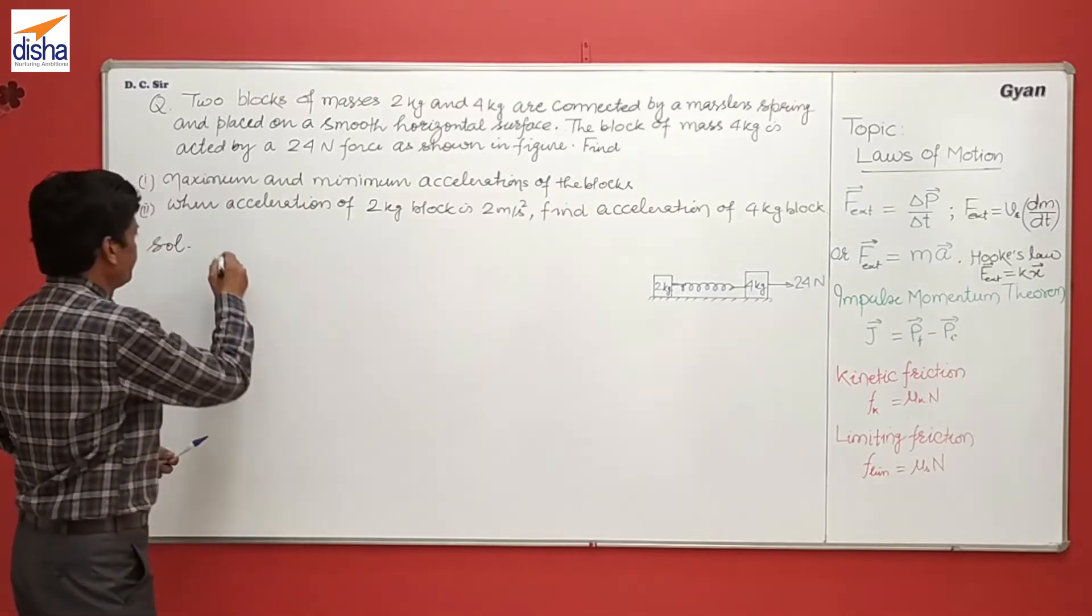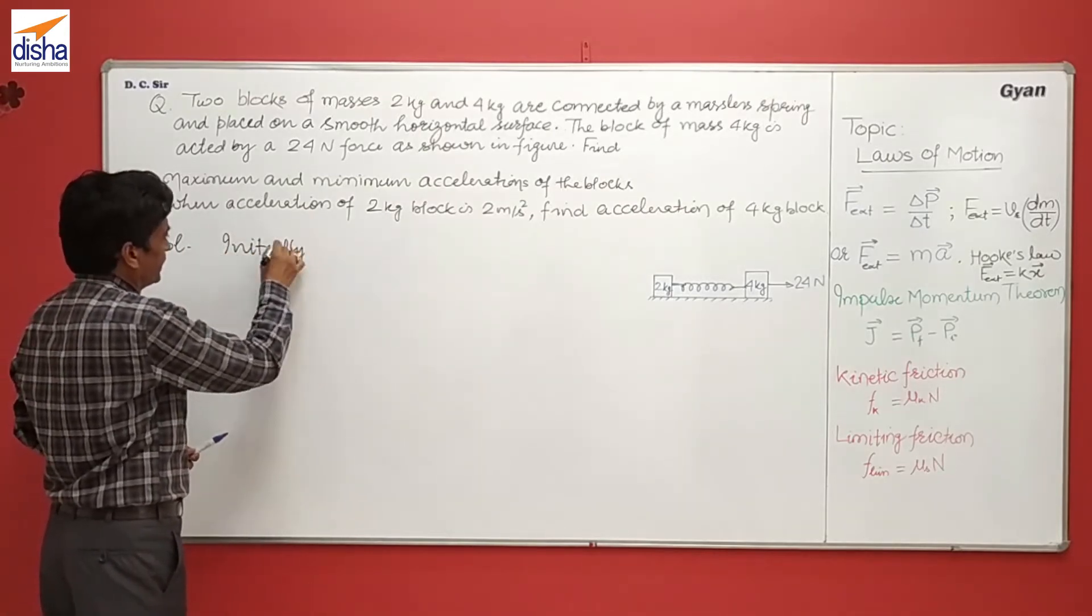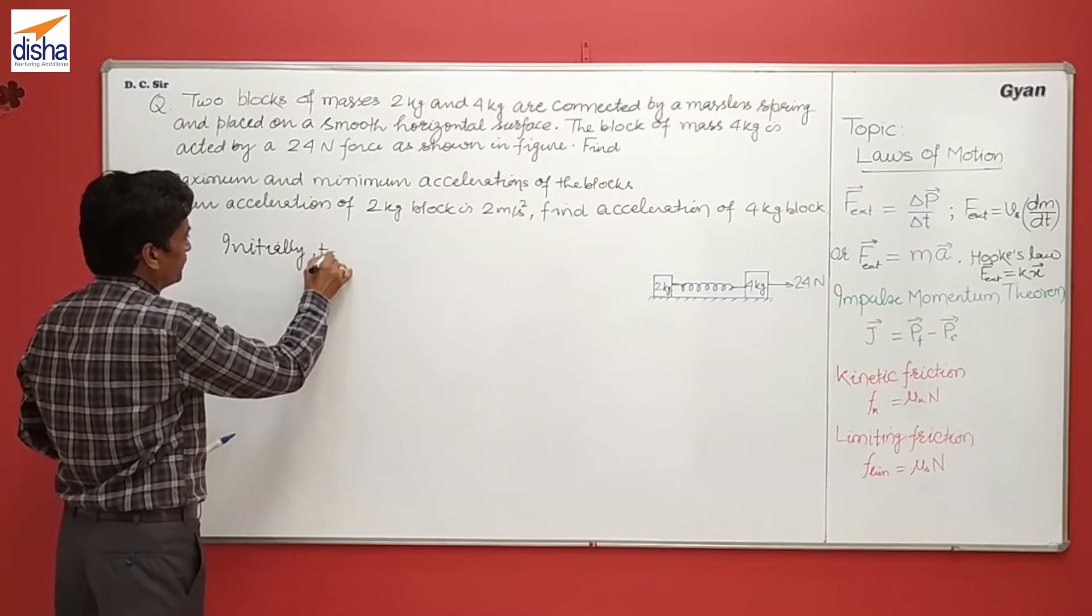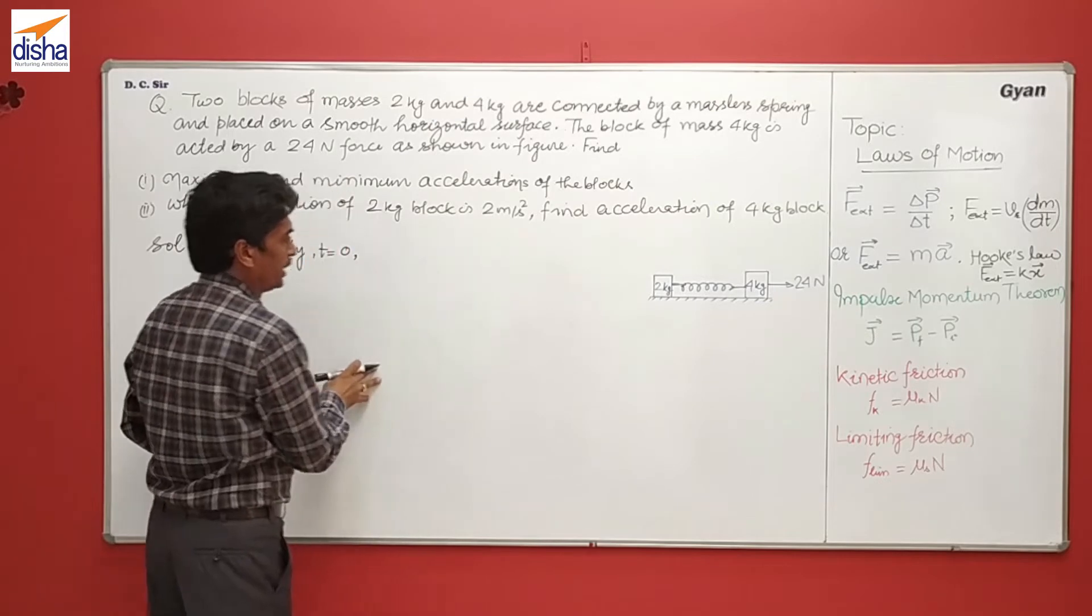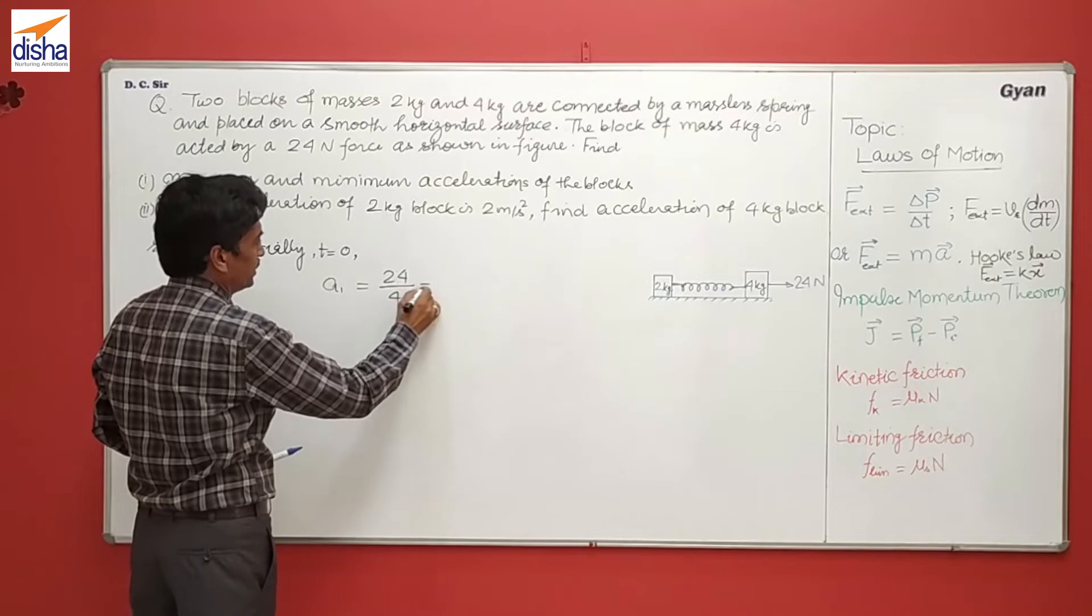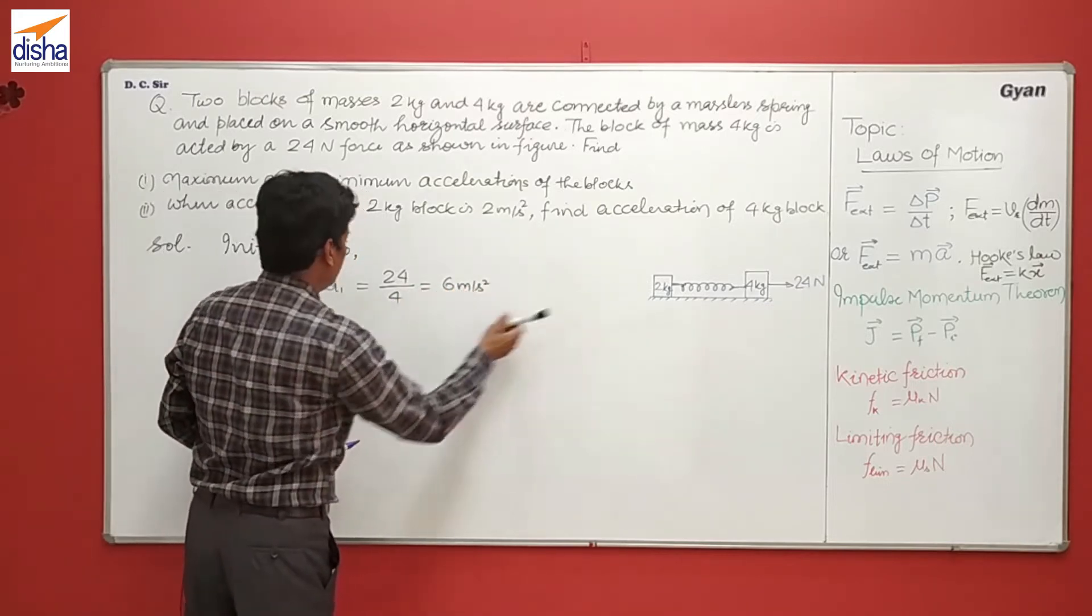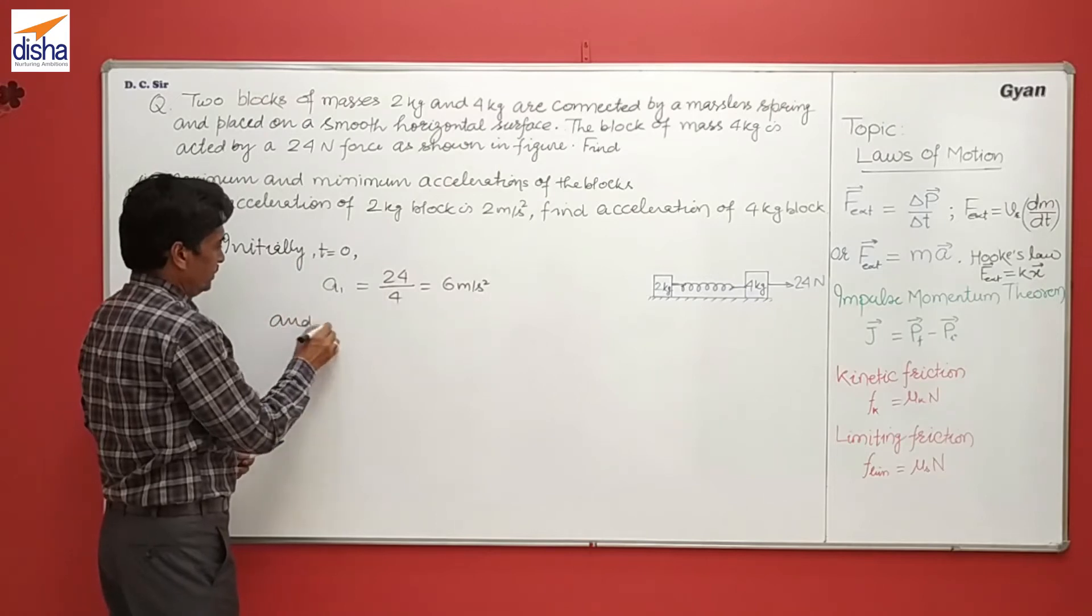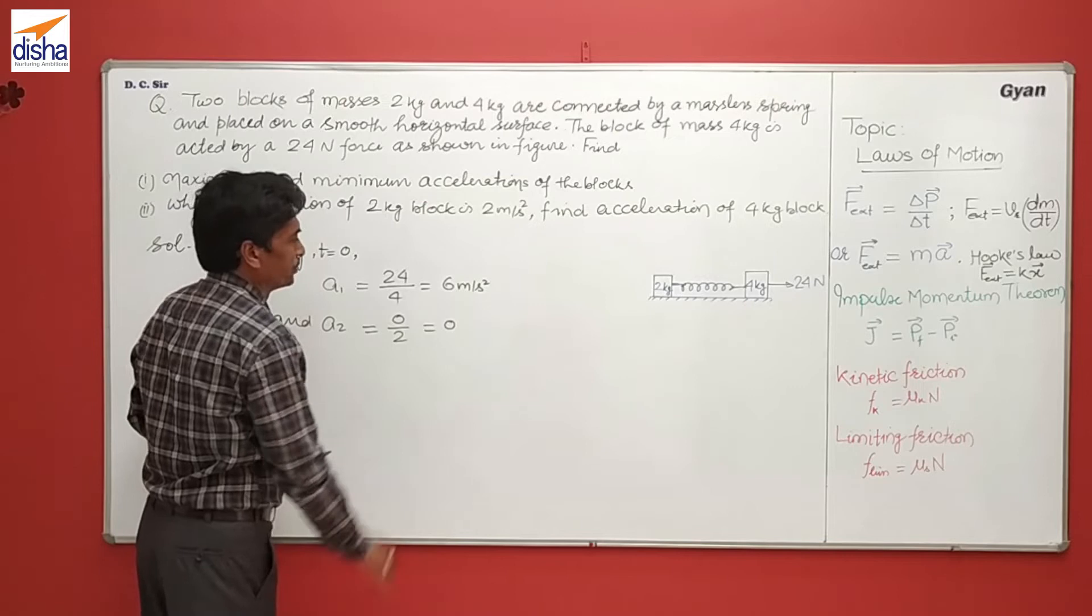So initially, at t equals 0, let the acceleration of 4 kg be a₁. a₁ equals 24 divided by 4, which is 6 meter per second squared. And the acceleration of 2 kg, that is a₂, a₂ equals 0 upon 2, it will be 0.